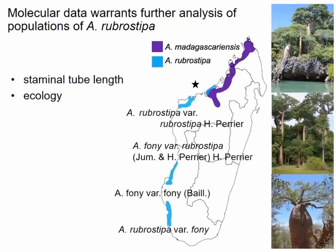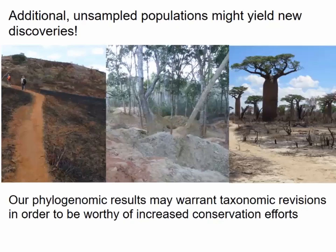We desperately need more collecting in remote parts of Madagascar. There are always rumors of baobab populations that haven't been studied scientifically. Our phylogenomic results, coupled with traditional taxonomy, warrant taxonomic revisions that would make these trees more worthy of conservation efforts. The three species with evidence for mixed ancestry and gene flow are the most widespread on the island but are currently listed as Least Concern by the IUCN — an important case for why increased conservation efforts are needed.